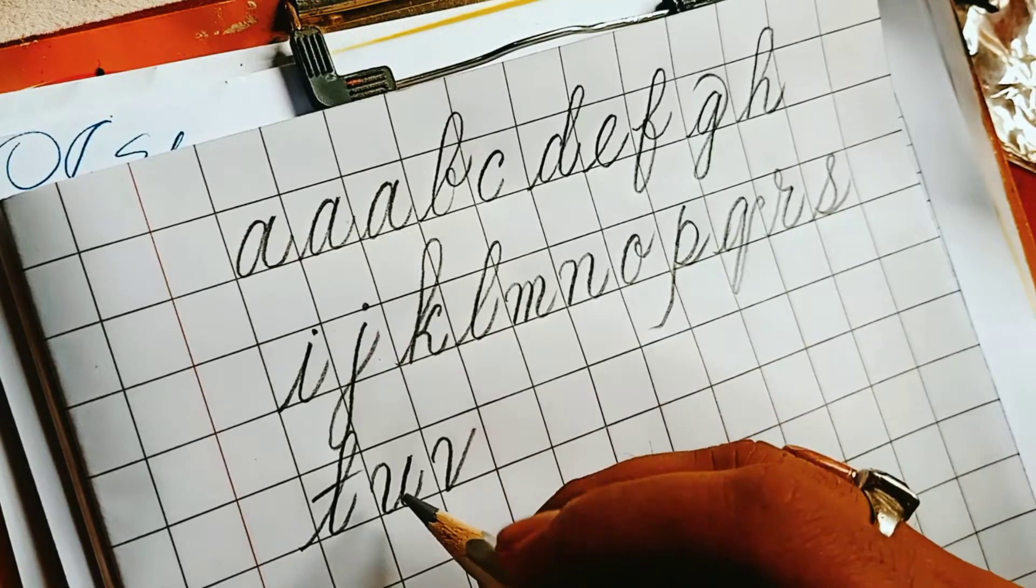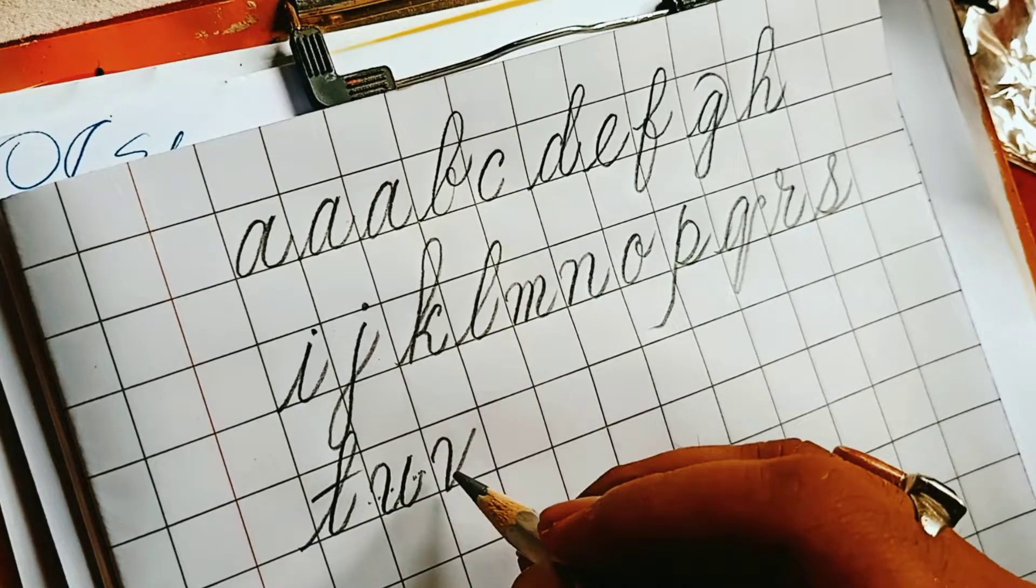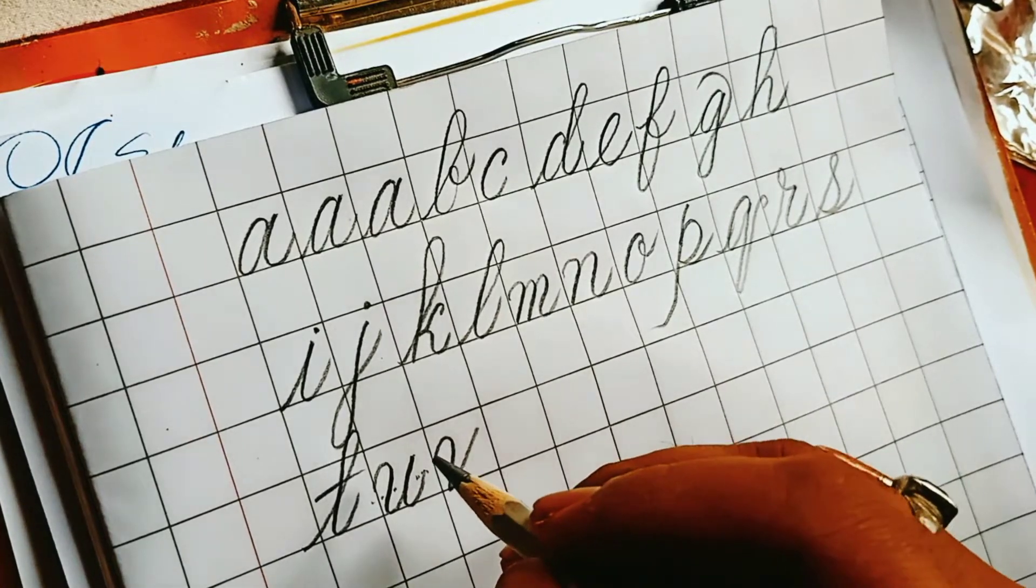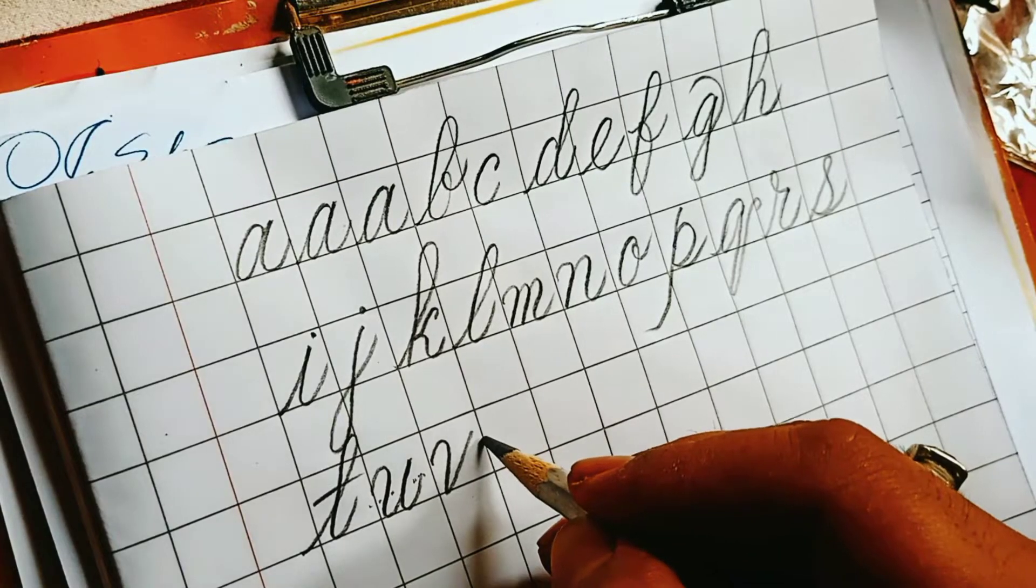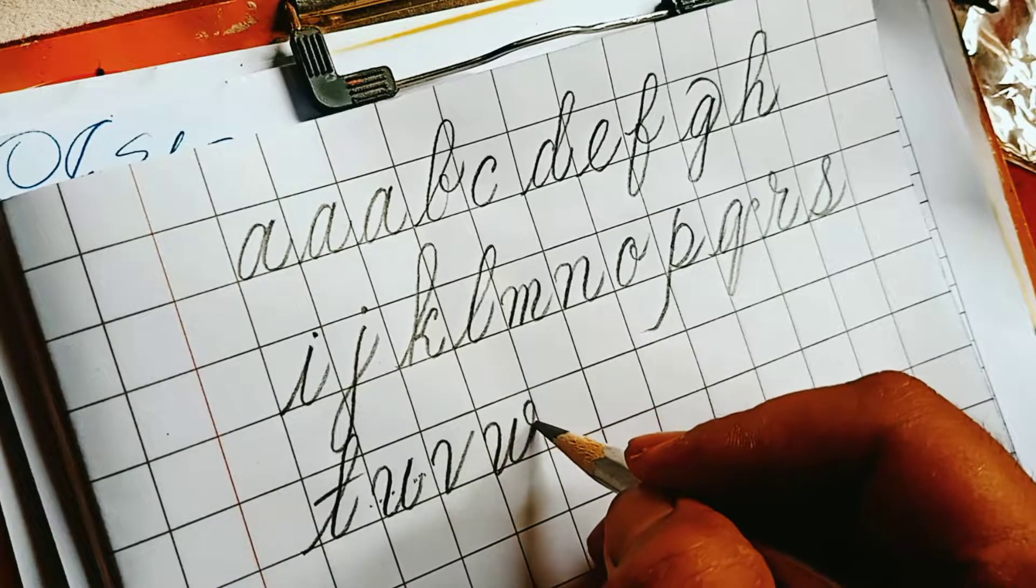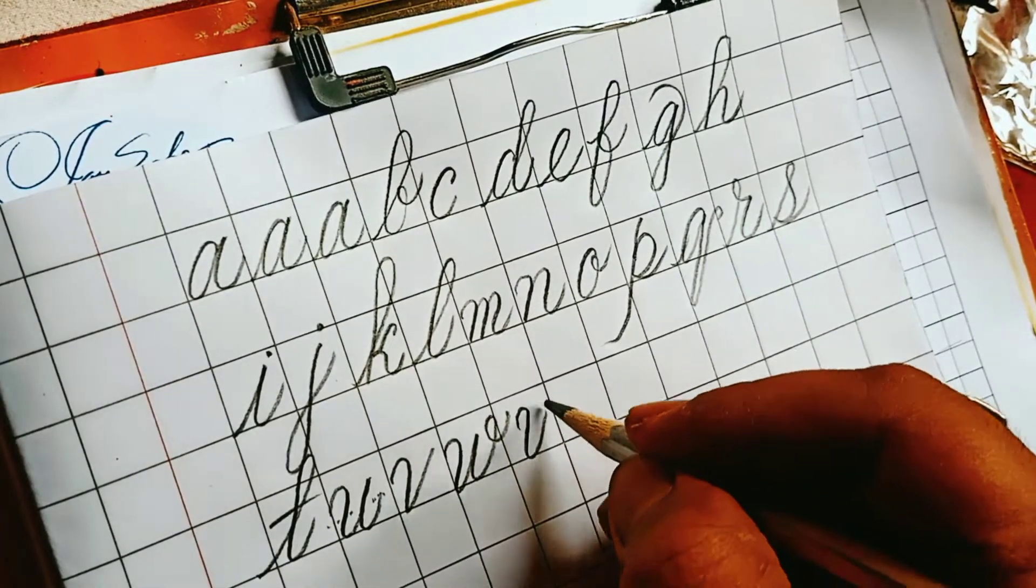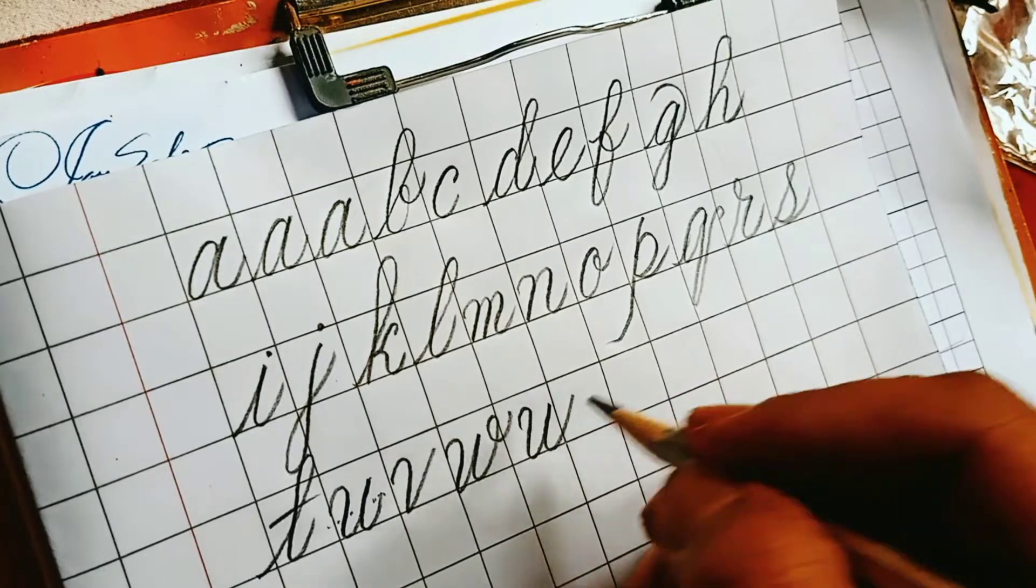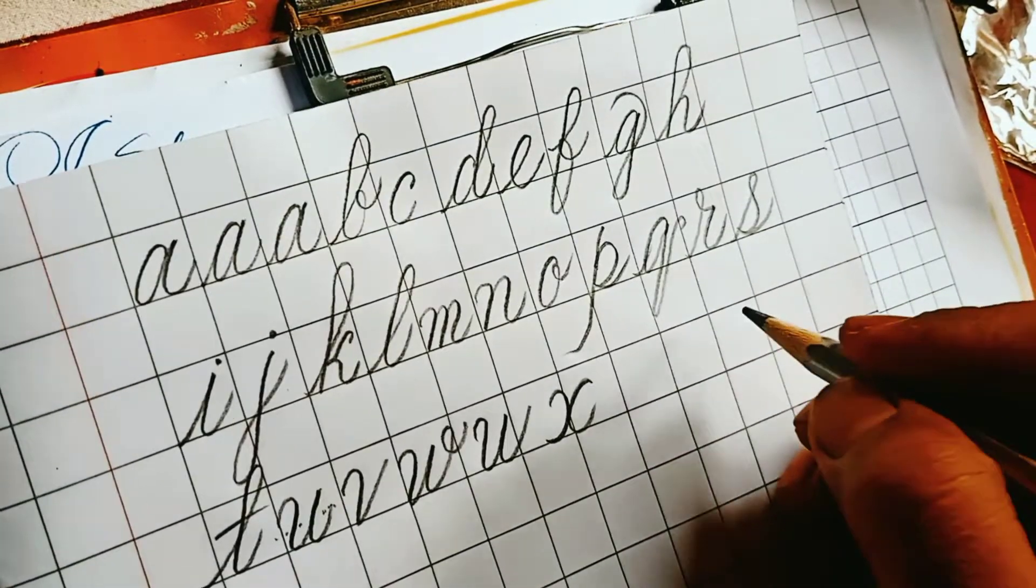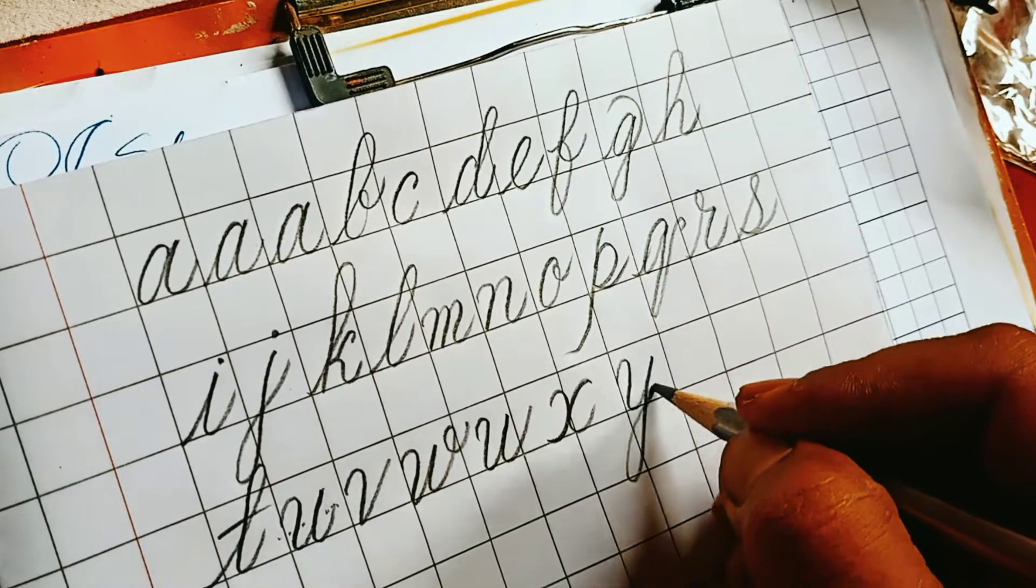Now see, in this U, this ending will be just here in the middle part, because if you move it a little bit up, it will look like W. Now see I am writing the W. I have given it a curve to make it beautiful. You can also write like this, simple way. X, Y, Z.